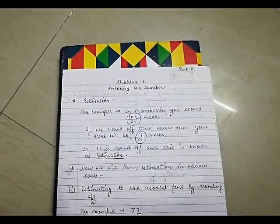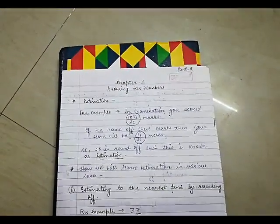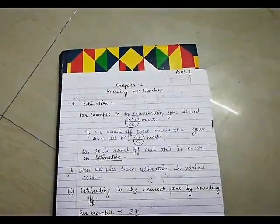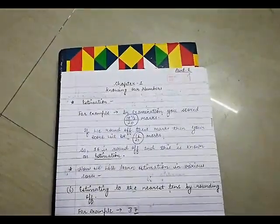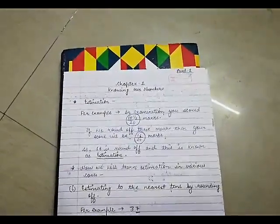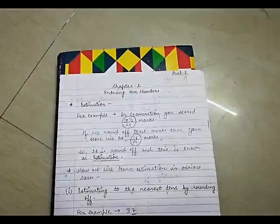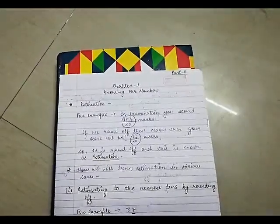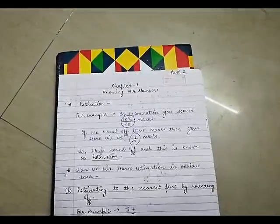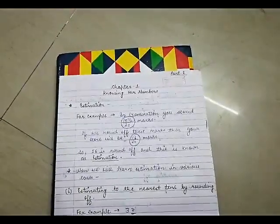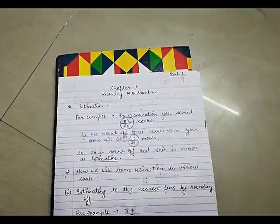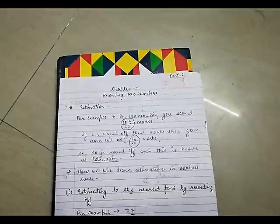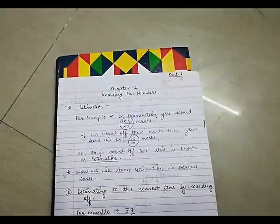Hello to all my dear students, I hope you all are doing well. This is Neha Sabnani. I have already given you Part 1, now we will see Part 2. In Part 2 we will learn about estimation. For example, in an examination you scored 15 and a half marks out of 20. If I ask you to round off your score, you will say you scored 16 out of 20. So 16 is the round off, and this is known as estimation — estimation means nearest value.